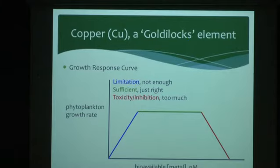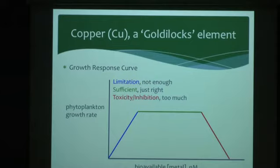There are regions of the ocean where copper is a limiting nutrient, typically tied with iron limitation — the Subarctic Pacific is an example. There are also regions where copper is toxic in near-shore waters where humans are introducing a lot of copper into the environment. Phytoplankton don't like their copper too high or too low — they like to be right in the middle.